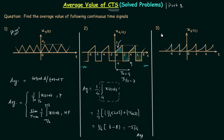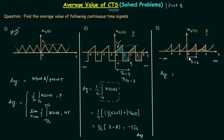Now we will solve the third problem. You can see this signal also extends from minus infinity to infinity. Checking for a repeating structure — yes, this structure is repeating again. So the signal x5(t) is periodic, just as x4(t) was periodic. Now we will calculate the average value using the same formula. The fundamental time period T0 is equal to 2.